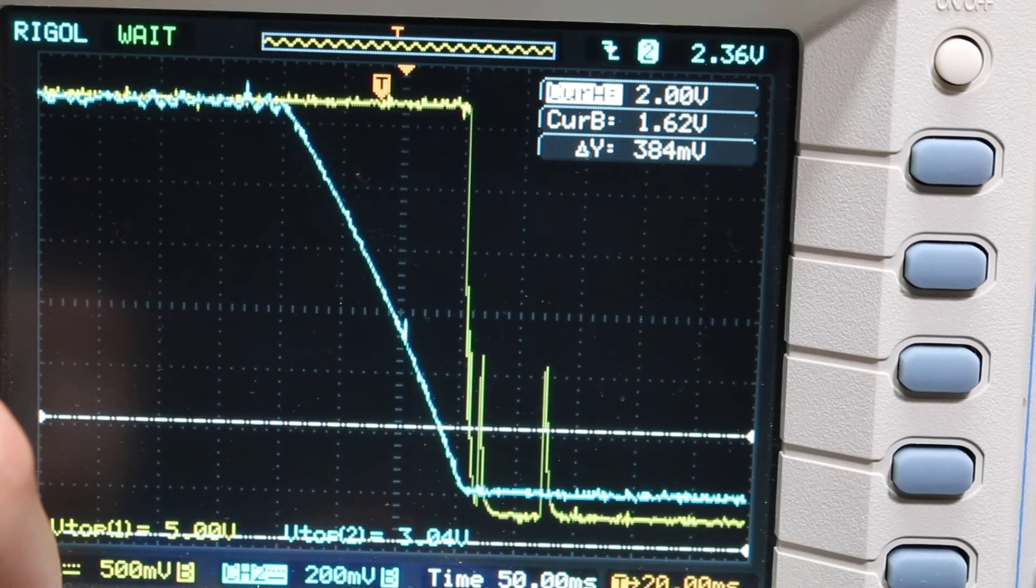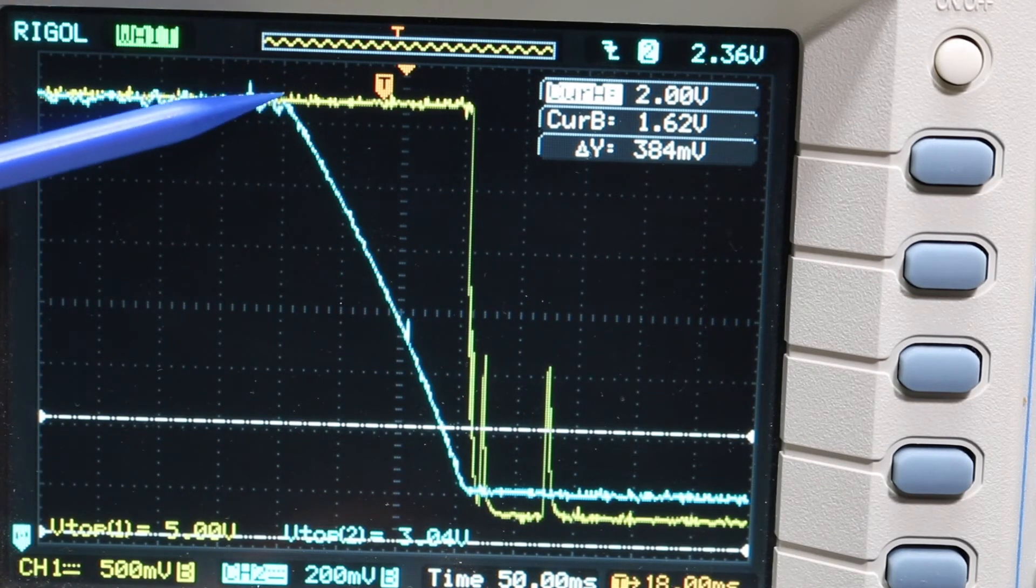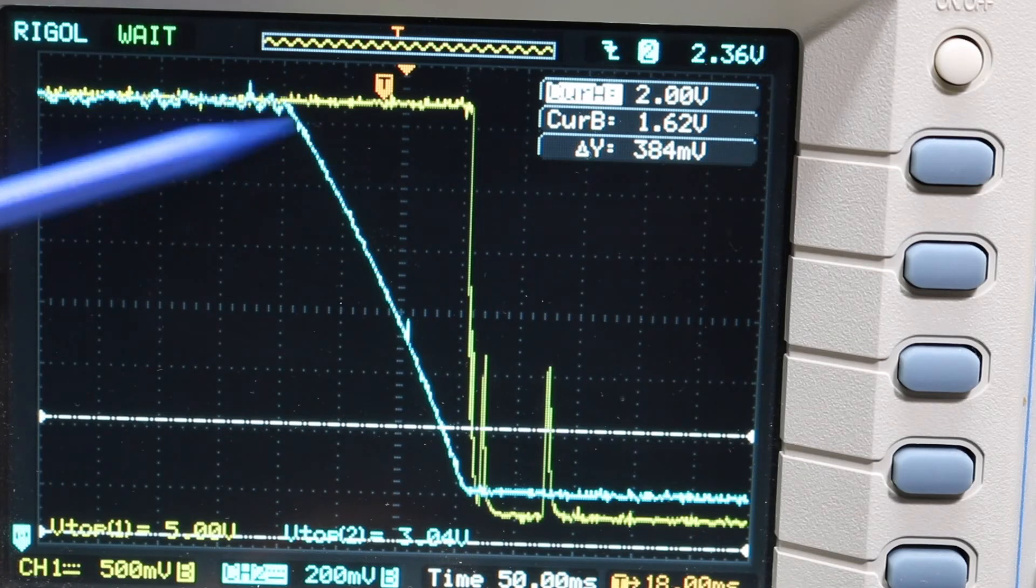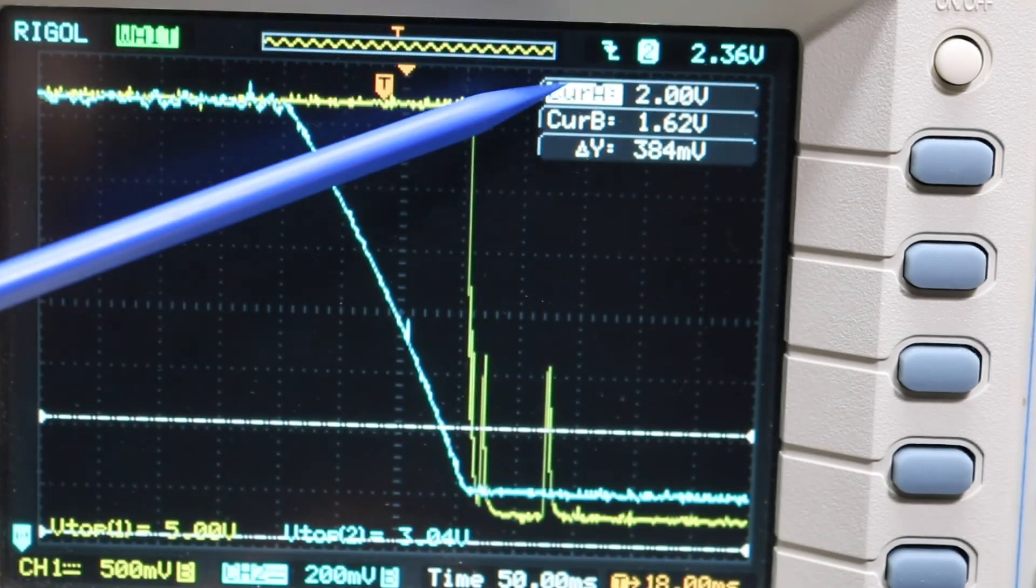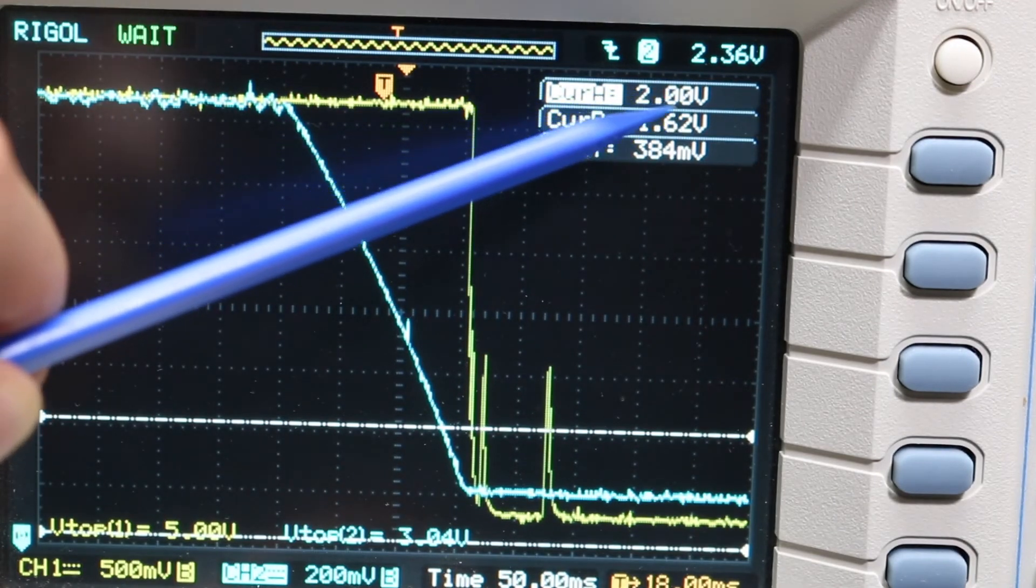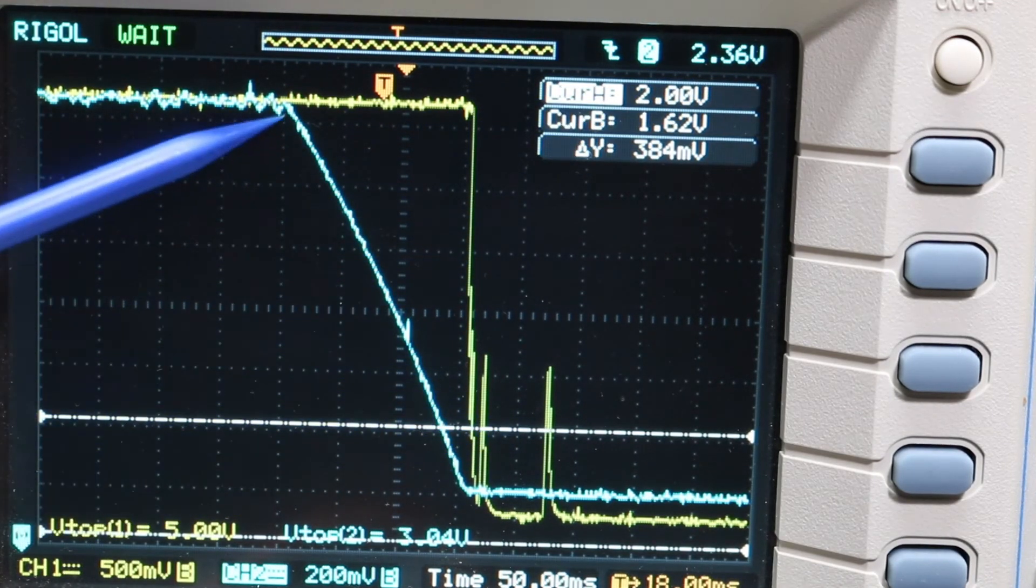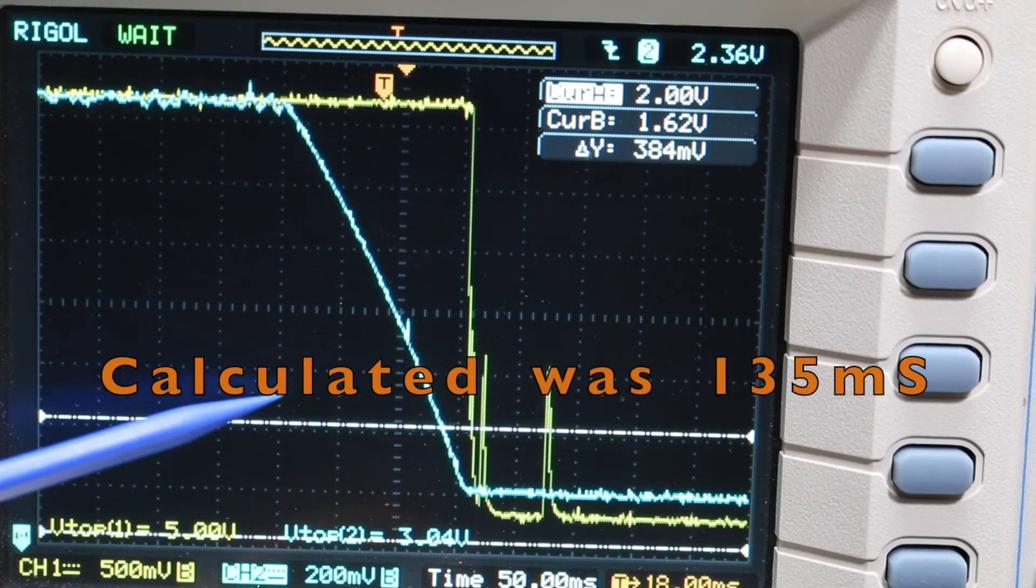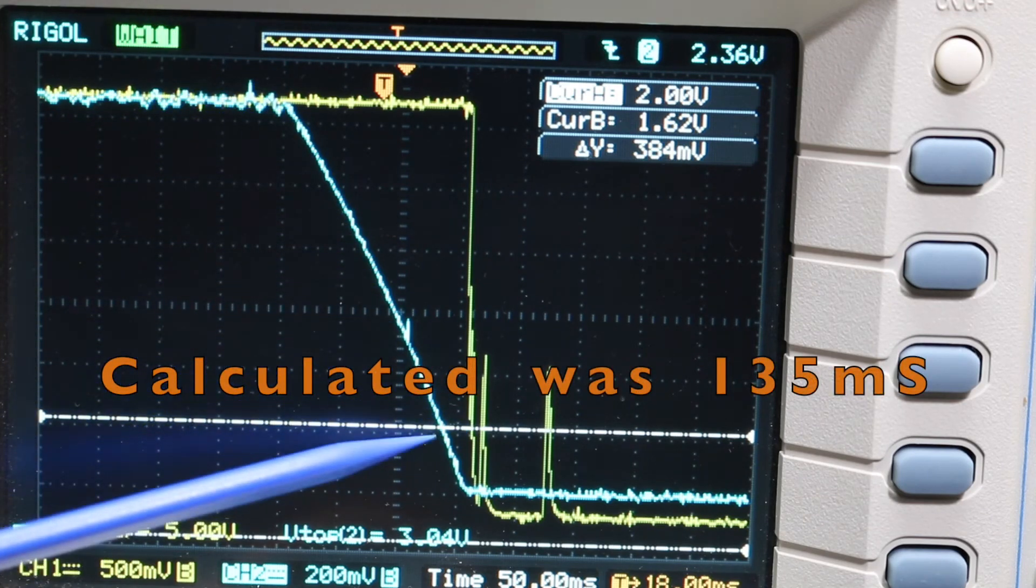So 50 milliseconds per division, depending exactly where I decide this started dropping, because there is a little ripple here as well, and looking at a cursor on a scope at exactly 2.00 volts, give or take, let's just say this looks to me like 140 milliseconds.